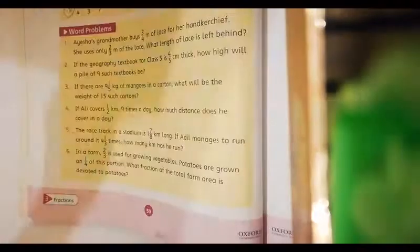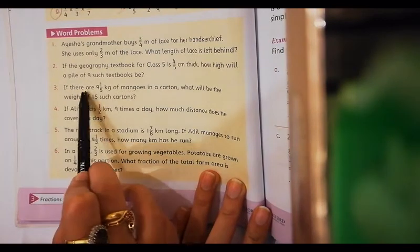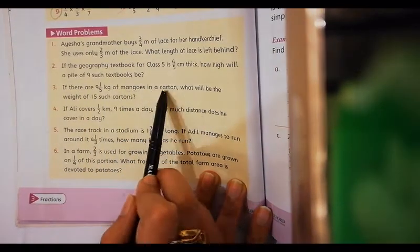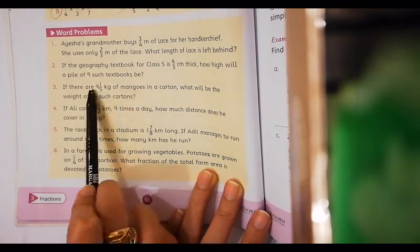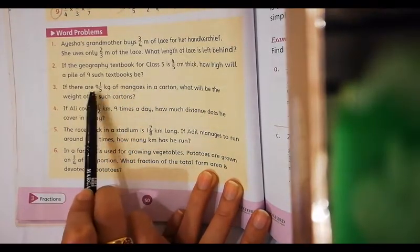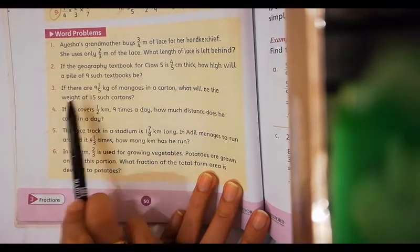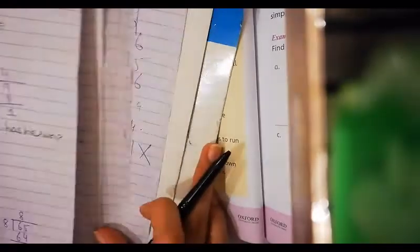Question number 3: if there are 9 whole 1/5 kg of mangoes in a carton, what will be the weight of 15 such cartons? I have total amount of mangoes given, 9 whole 1/5 kg. I have to find out total weight of 15 such cartons. Simply, you have to multiply both of them.